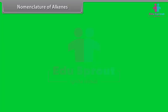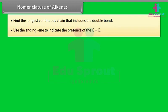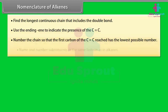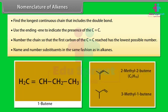Nomenclature of Alkenes. Step 1: Find the longest continuous chain that includes the double bond. Step 2: Use the ending '-ene' to indicate the presence of a carbon-carbon double bond. Step 3: Number the chain so that the first carbon of the carbon-carbon double bond has the lowest possible number. Step 4: Name and number substituents in the same fashion as in alkanes. For example, 1-butene, 2-methyl-2-butene, and 3-methyl-1-butene.